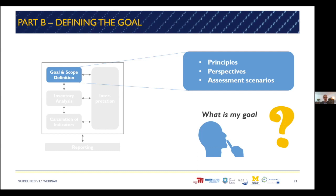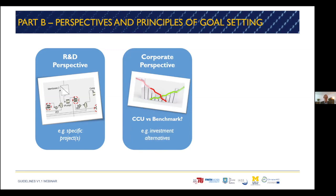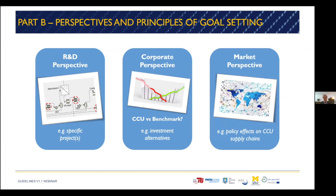Following the ILCD handbook, we looked at three perspectives for goal definition. The first is the R&D perspective, which looks at specific processes or projects and is common in early phase projects, especially for scientific and academic communities but also R&D departments in industry. The corporate perspective focuses on the industrial side, comparing different investment alternatives, especially between benchmark technologies. And then we have the market perspective, which takes a more holistic view — for example, on the effects of policy or on the whole value chain. Depending on what perspective you take, your goal and study design can dramatically change — either focusing on a specific process or spreading out across an overall supply chain.